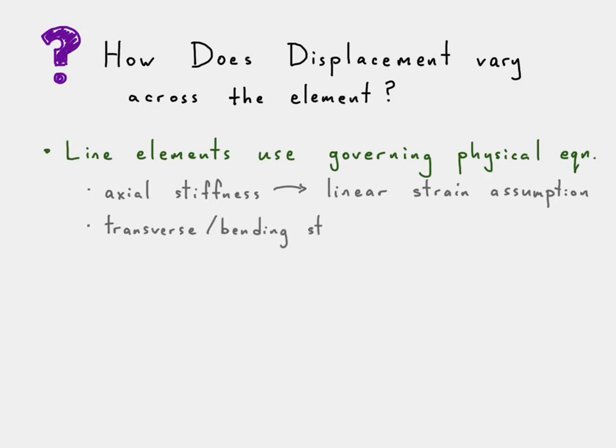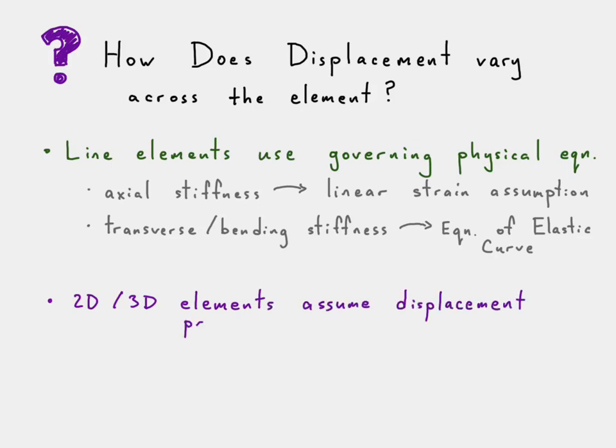When we look at the transverse or bending stiffness, beam element type stuff, then we use the equation of the elastic curve to describe how that element can deform over its length. While line elements use governing physical equations, 2D and 3D elements actually assume a displacement profile.